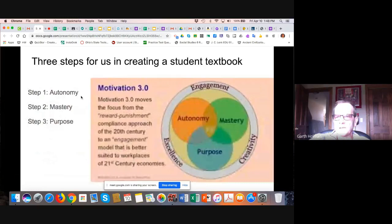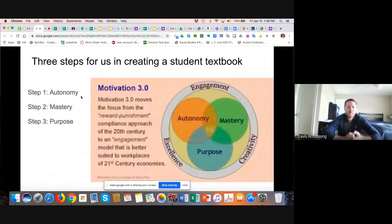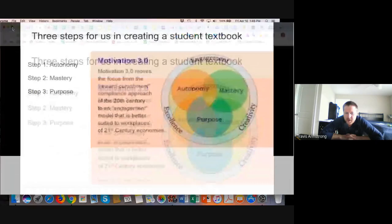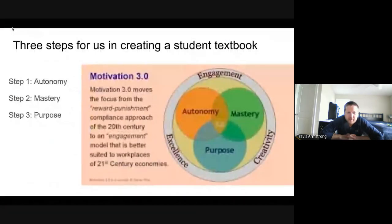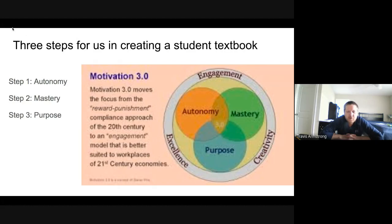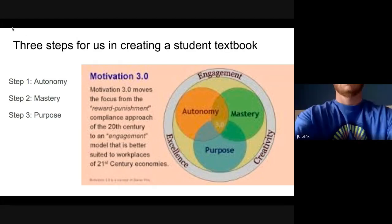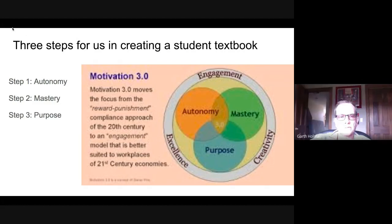The three steps that have guided everything we're doing — and thus guiding us in the creation of these student textbooks — are the three outlined here: autonomy, mastery, and purpose. Throughout the presentation we'll start with autonomy, what it looks like, what we mean by it within the school setting, then mastery, and finally purpose — where we'll really showcase some examples of the student-created textbooks.